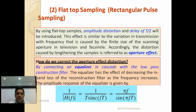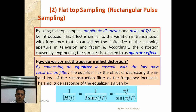By using flat top sampling, amplitude distortion and delay are introduced. This effect is similar to the variation in transmission with frequency caused by the finite size of the scanning aperture in television. The distortion caused by lengthening the sample is referred to as the aperture effect.